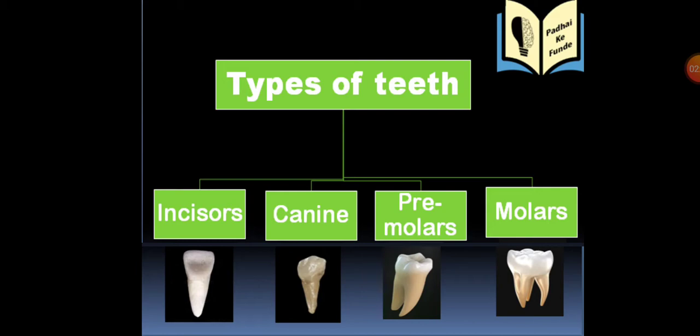The third type is premolars. Premolars are bigger than canines and incisors. They have a flat surface with ridges for crushing and grinding food into smaller pieces to make it easier to swallow.